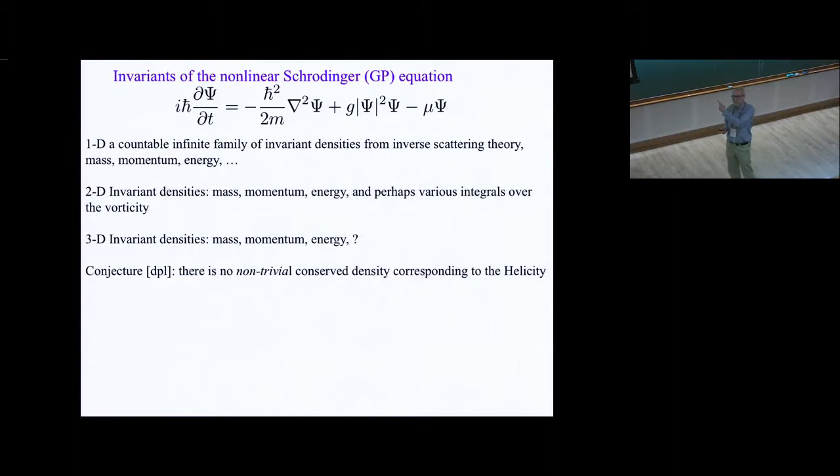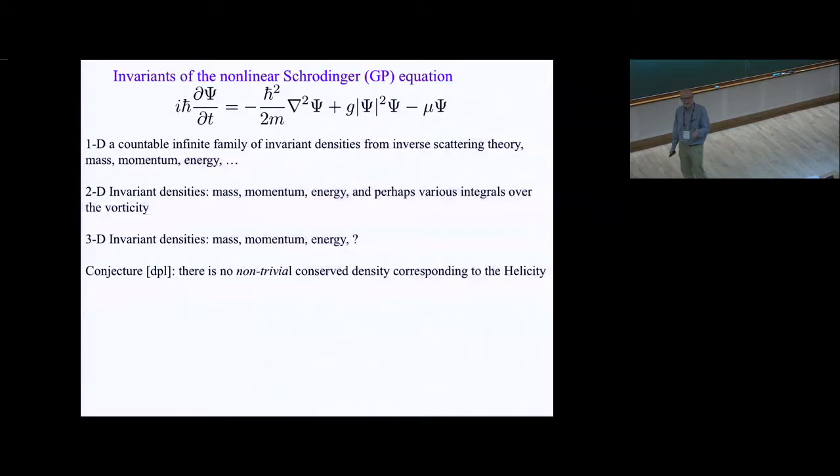As is often the case, we go up in dimensions, be it Navier-Stokes or quantum fluids, things get harder. I'm just going to conjecture that there's no non-trivial conserved density corresponding to the helicity for nonlinear Schrodinger equation. When I say non-trivial here, I just mean other than zero being conserved. Nonetheless, we want to go forward to try to tease out the helical dynamics by using various helicity proxies.